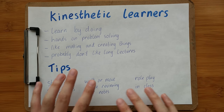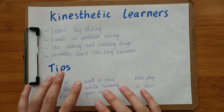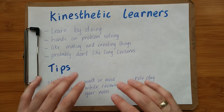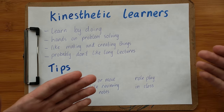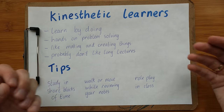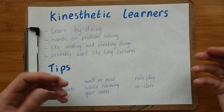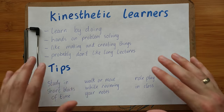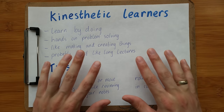The last kinesthetic tip is roleplay. In class, there may be an opportunity to do a roleplay. If you're learning new words, you can do a roleplay using those words. If you're learning a language, you can make a short roleplay — maybe a shopkeeper and a customer. Roleplay will help because it's physical: you're moving while learning.